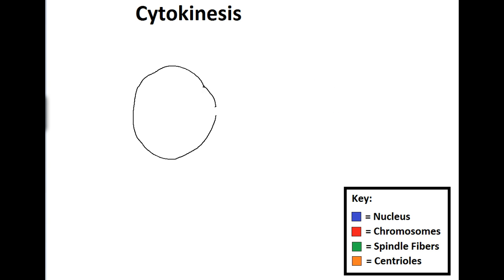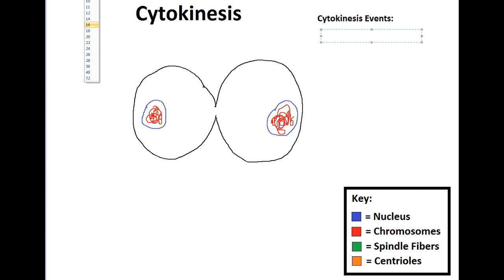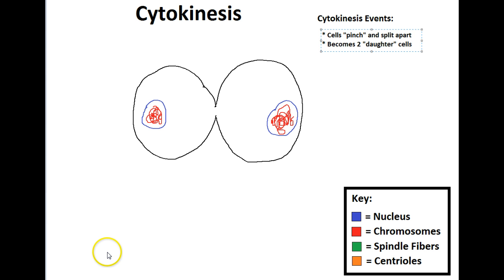Now we're going to look at our final phase: cytokinesis, which is really kind of part of telophase. The cell has almost entirely pinched together — the nucleus is completely reformed and the chromosomes have completely unraveled into chromatin. The main events of cytokinesis: the cells pinch and split apart, becoming two daughter cells.